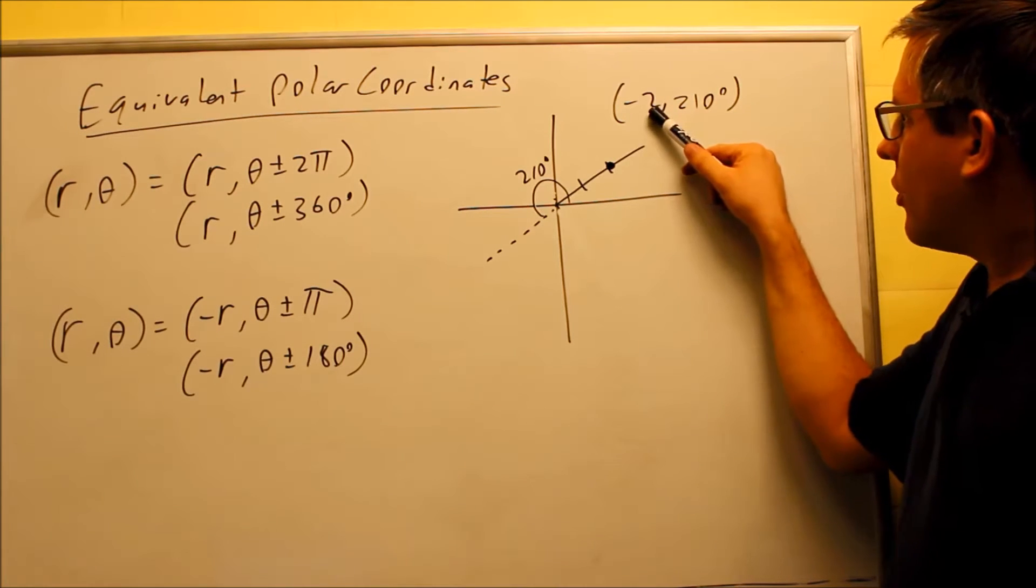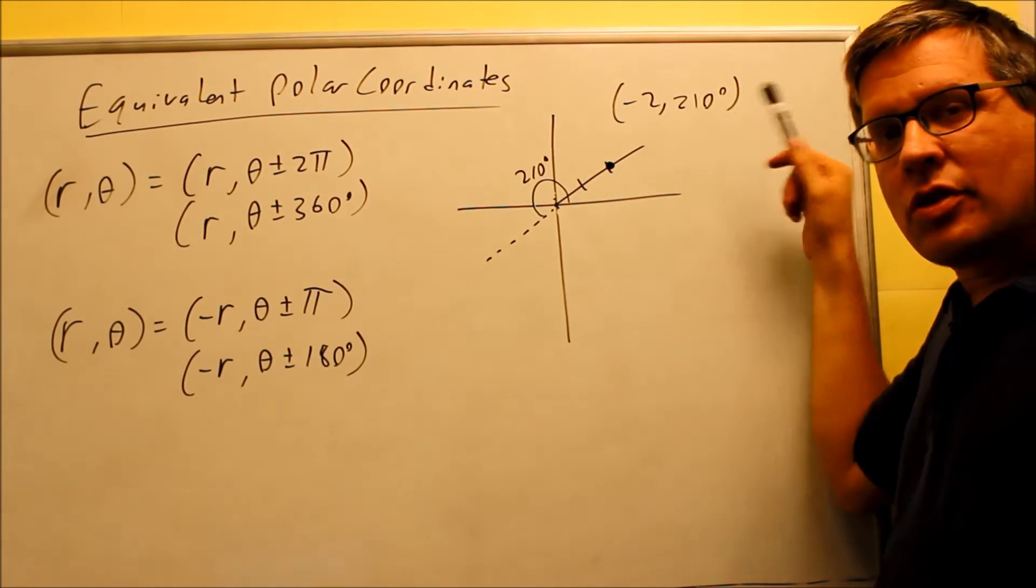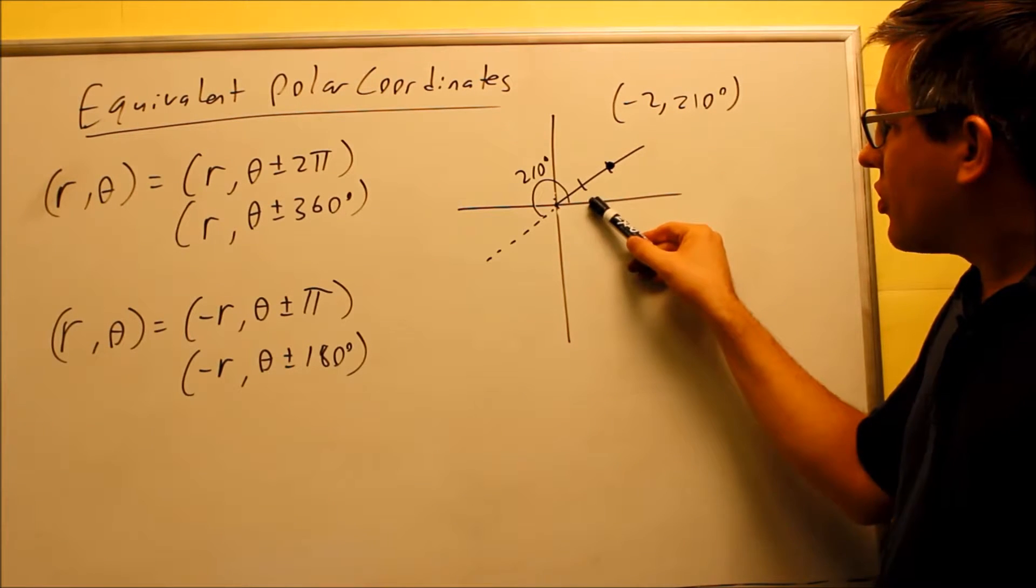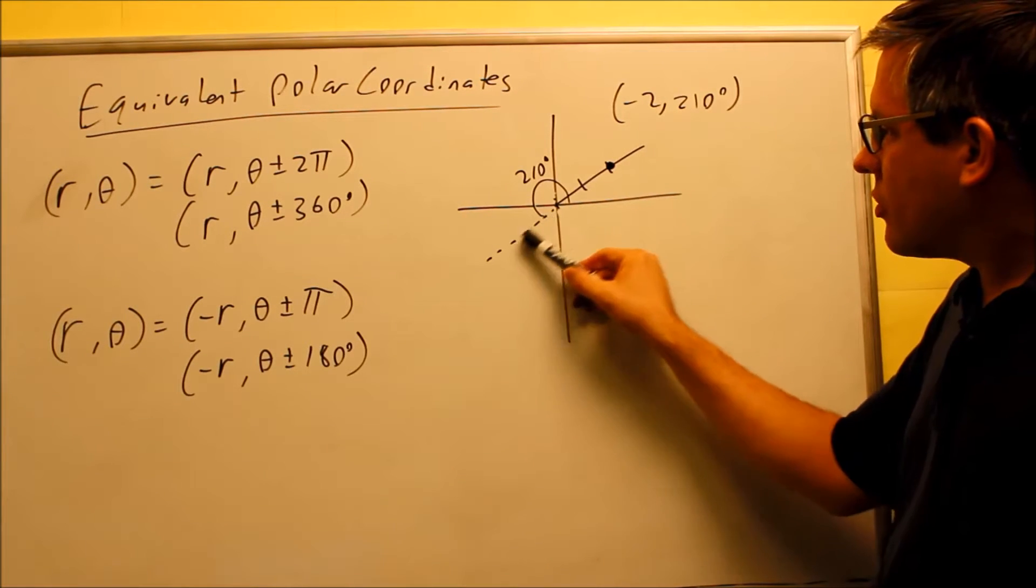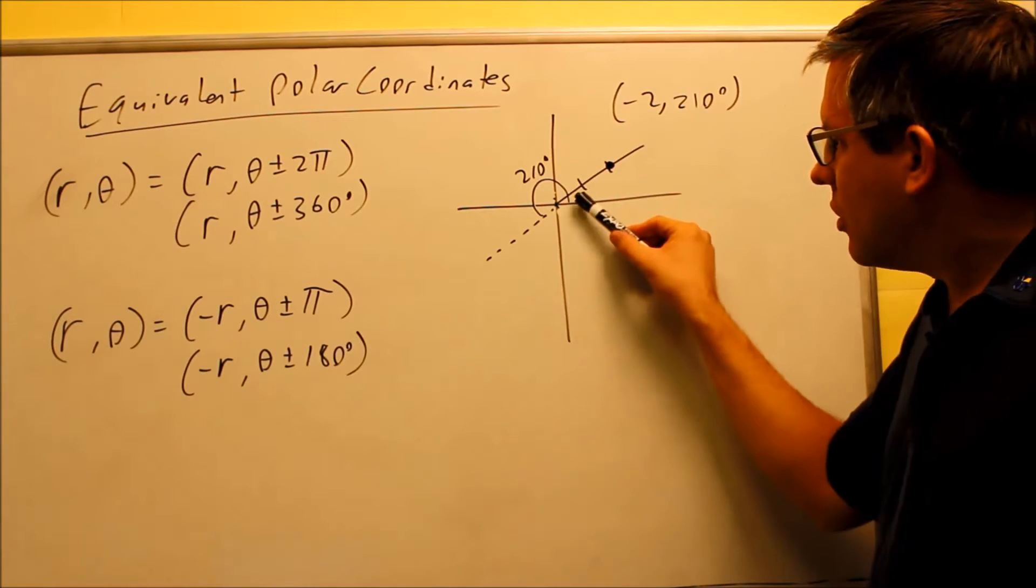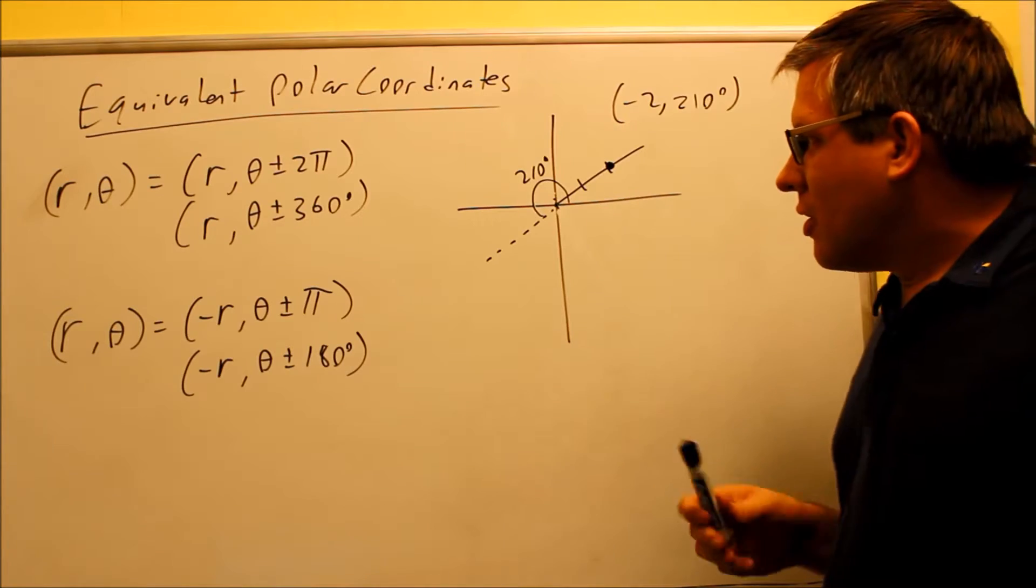So the point I have here is (-2, 210°), and if I wanted to plot that like the previous video, what you would do is start here, go 210 degrees, make that a dotted line, reverse it 180 degrees in the other direction, and our point ends up here.